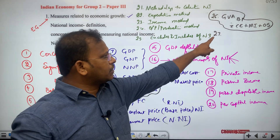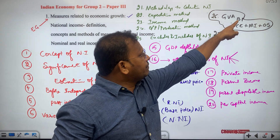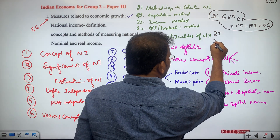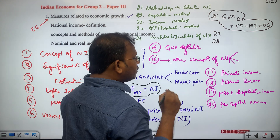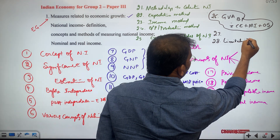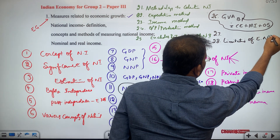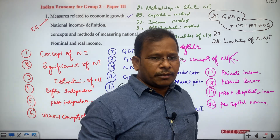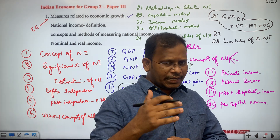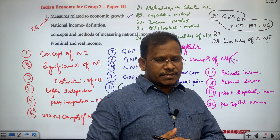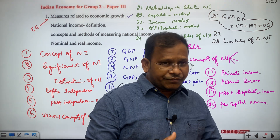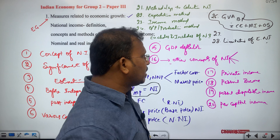The 27th subtopic is the differentiation between GVA at basic price and NNP at market price. The 28th subtopic covers limitations of estimation of national income — because even after 75 years of calculating national income, India still faces many limitations in this calculation, and those phenomena will be discussed.